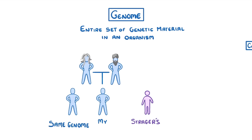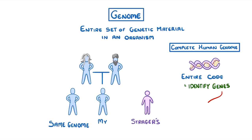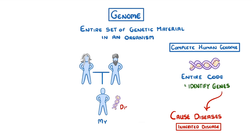Scientists have now worked out the complete human genome, which is to say that they know the entire code that our DNA holds. As well as being generally pretty interesting, this allows us to identify genes that are linked to certain types of diseases. Sometimes the genes may cause a particular disease, in which case we call it an inherited disease, because you inherit the genes, and therefore the disease, from your parents. In other cases, the genes might just increase the risk of a certain disease.